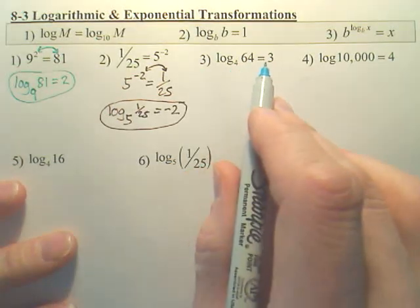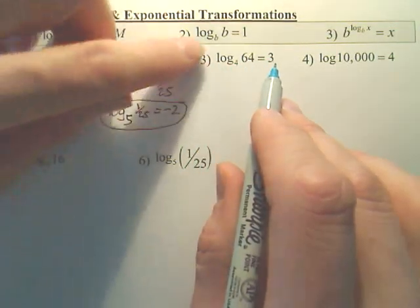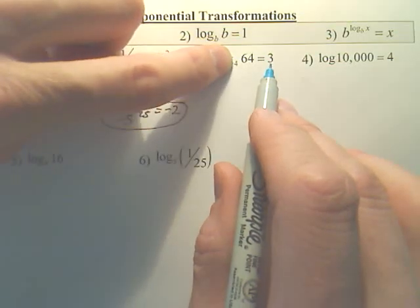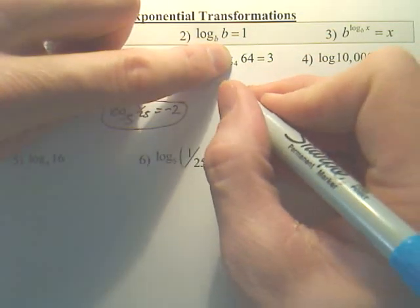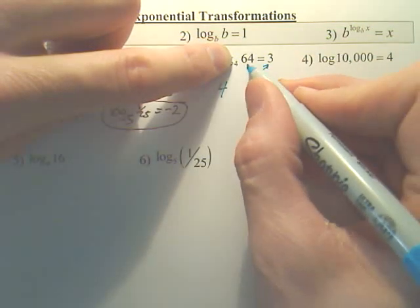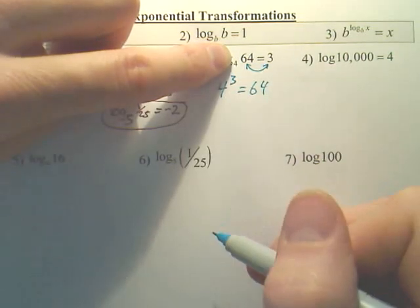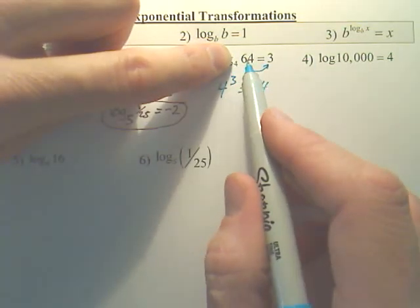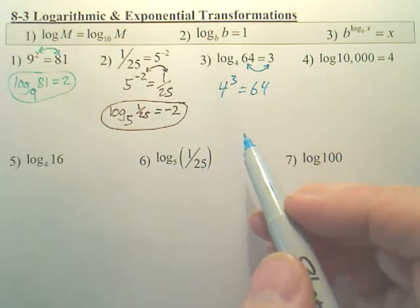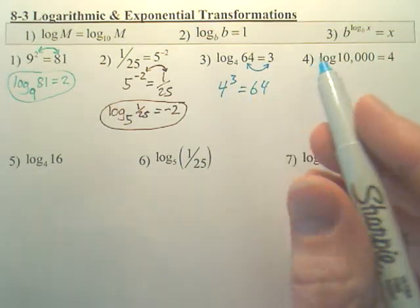Number 3. I want to change this into an exponent. So, to change it into an exponent, I drop the log. Cover it up, and then I switch these two. Again, I cover up the log and switch the 64 and the 3. There's my answer. And is that true? Is 4 to the third 64? Yeah.